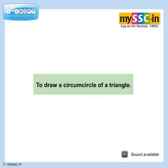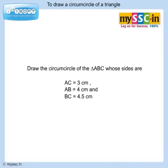Draw the circumcircle of the triangle ABC whose sides are AC is equal to 3 centimetre, AB is equal to 4 centimetre, and BC is equal to 4.5 centimetre.